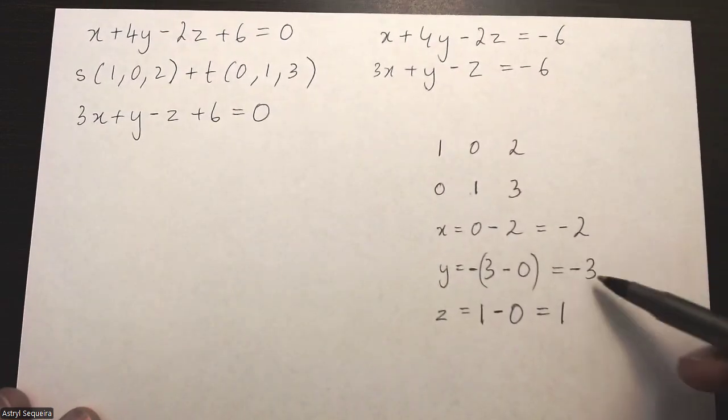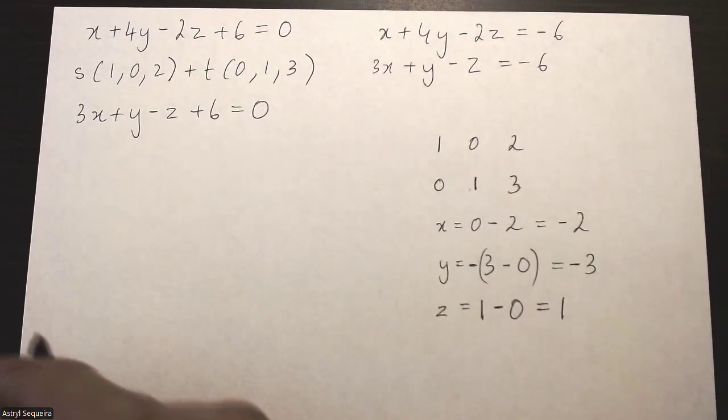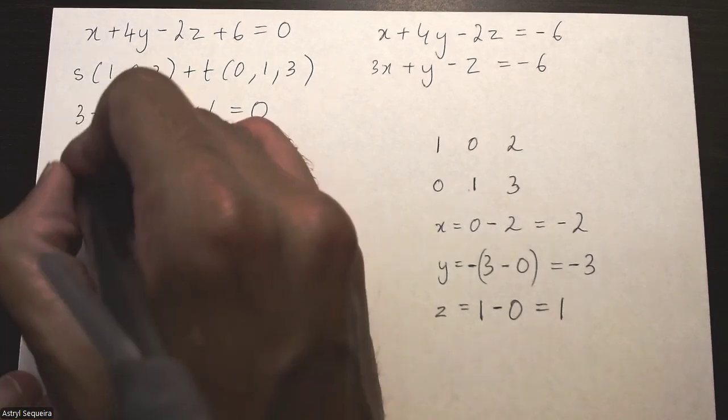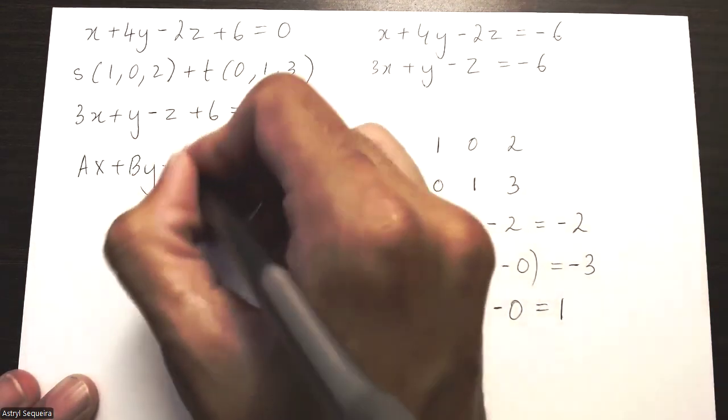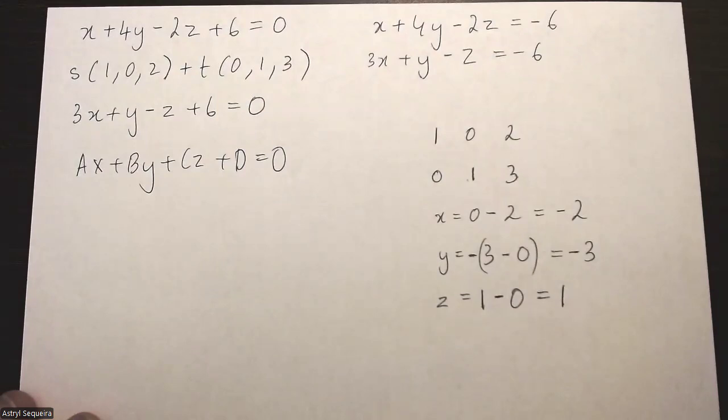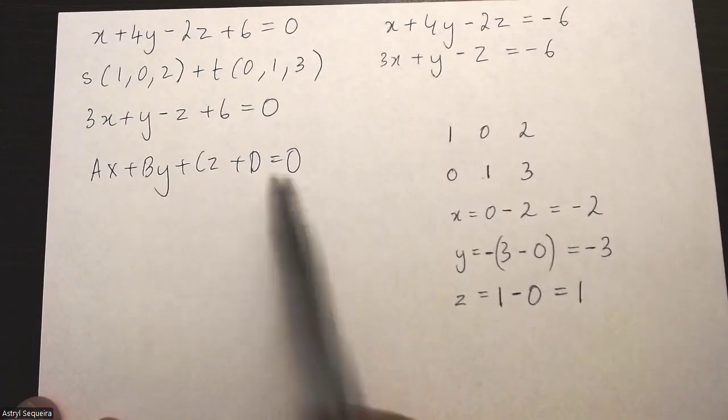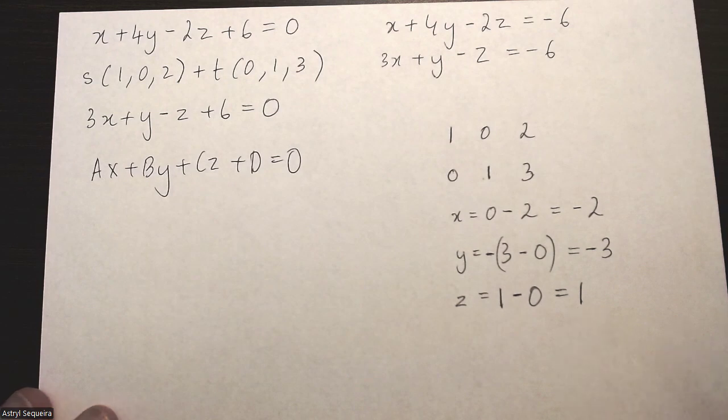So these are the a, b, and c. This is basically the cross multiplication of these two, which are my a, b, and c for my Cartesian form. So we'll start by just writing the regular equation here in Cartesian form of a plane. Then I'll replace a, b, and c with my x, y, and z values that I've calculated here for the normal vector.